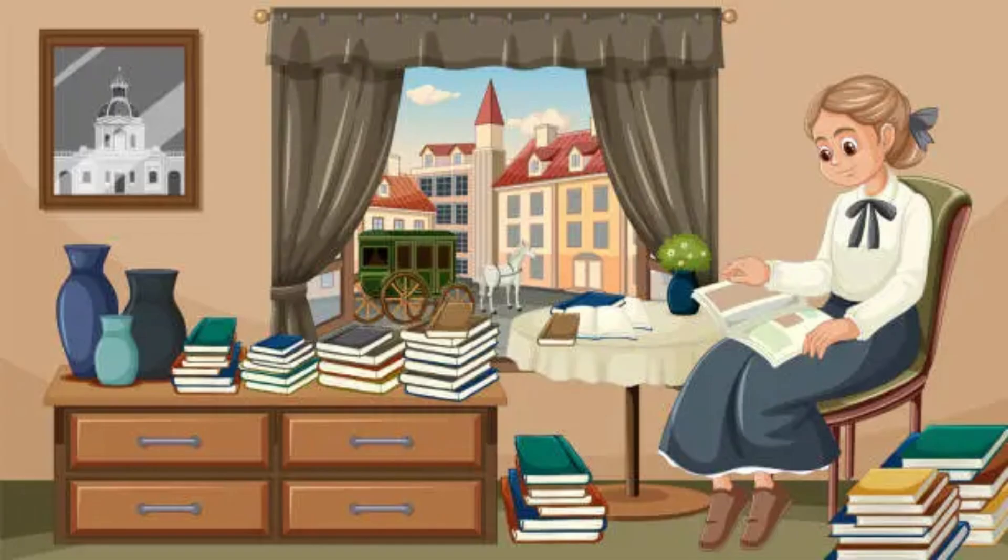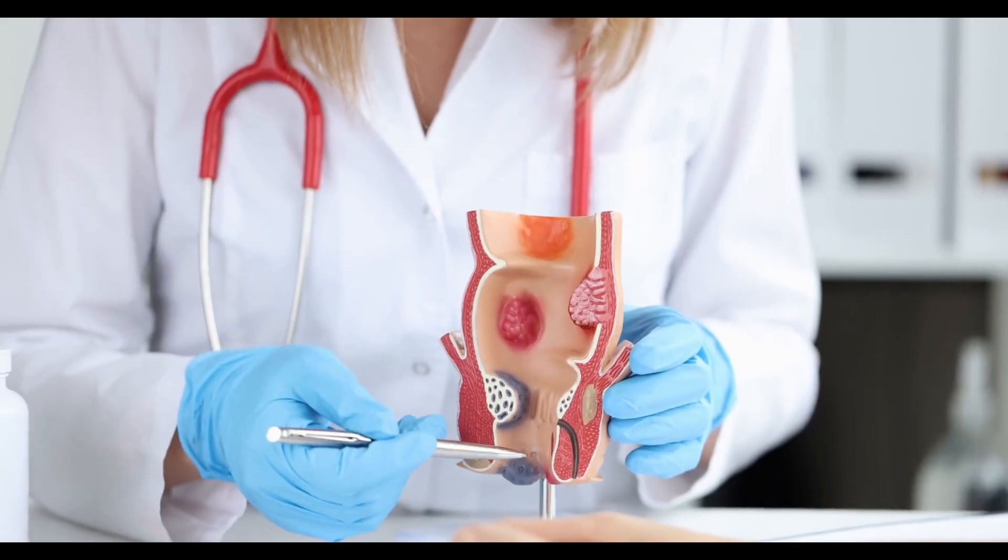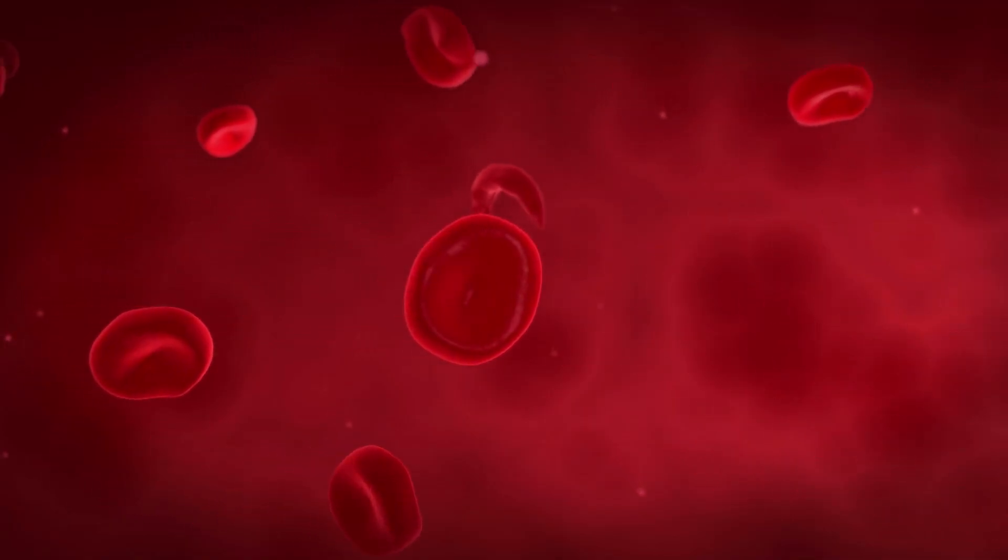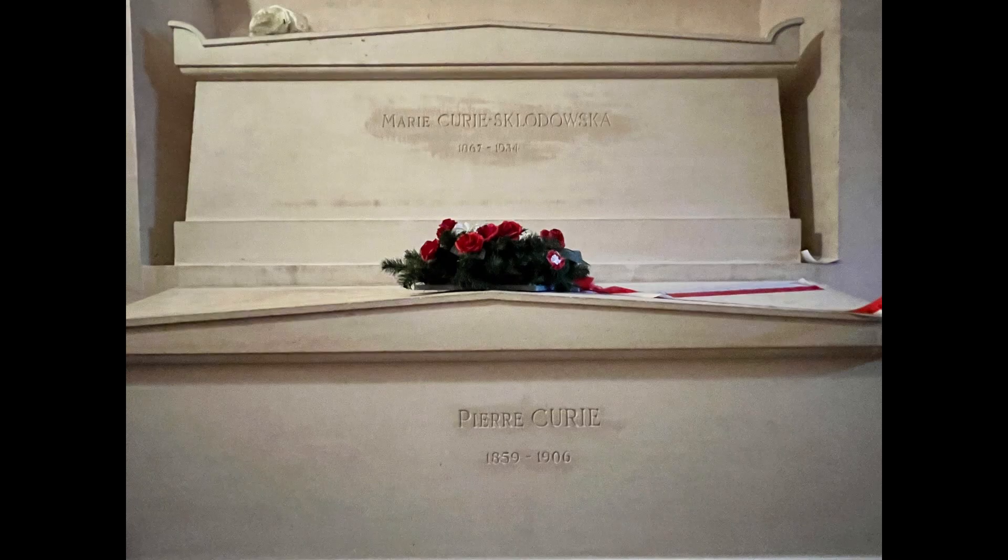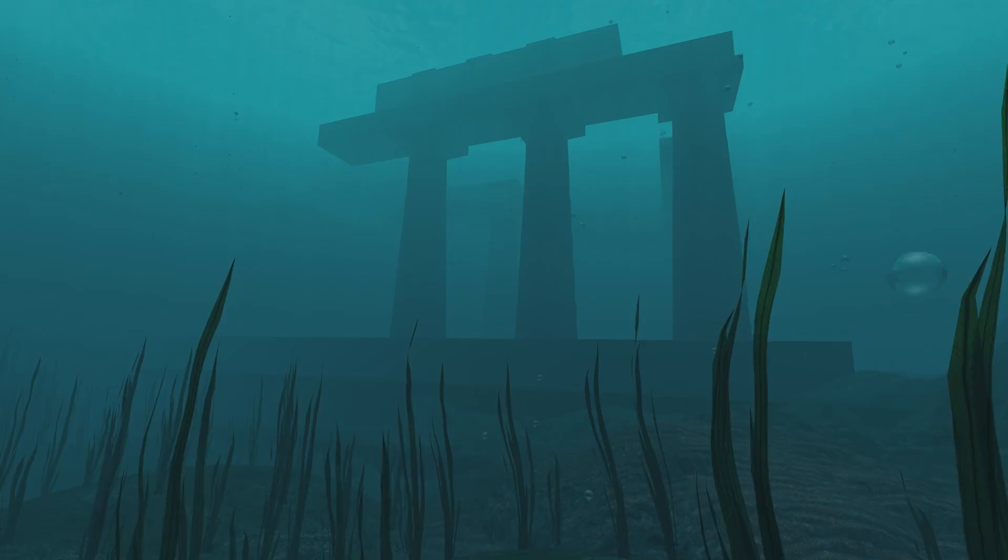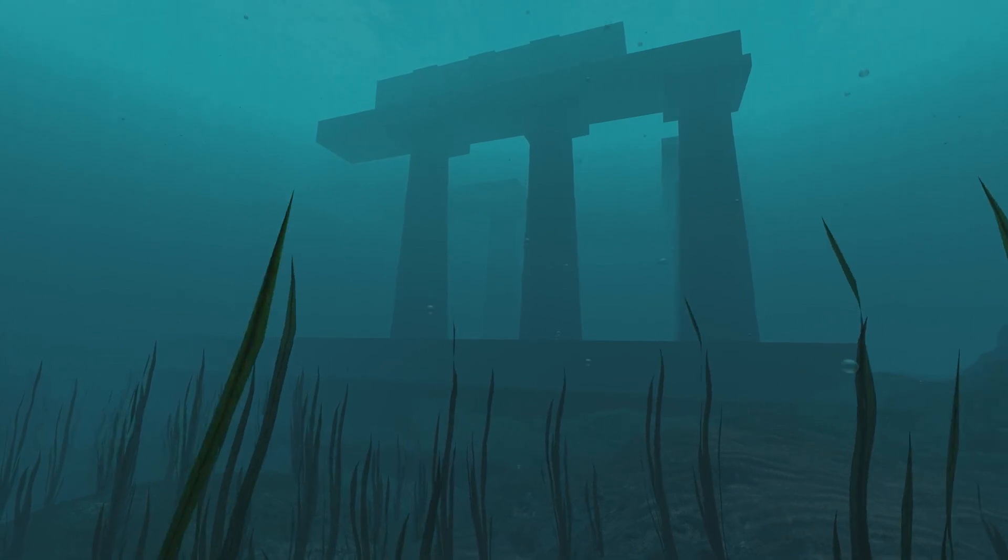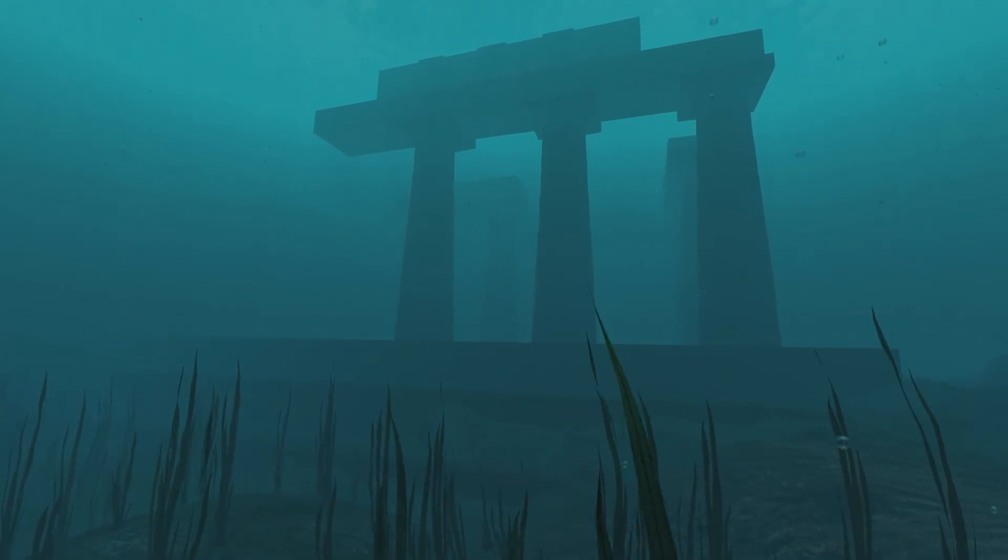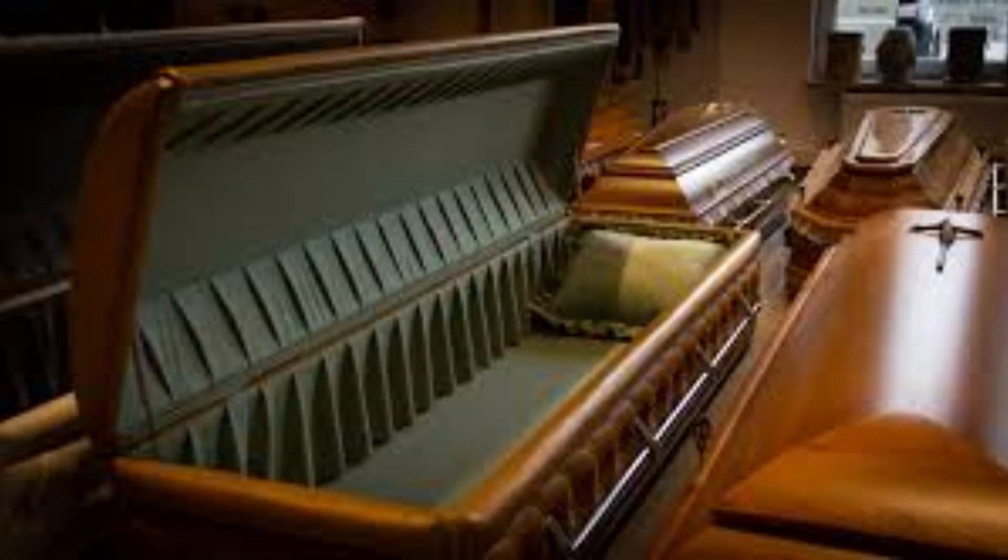Marie Curie's dedication came at a devastating cost. She ultimately succumbed to aplastic anemia, a condition linked to prolonged radiation exposure. But even in death, the radiation she worked with remained. When Curie died, her body was so radioactive that she had to be laid to rest in a lead-lined coffin.